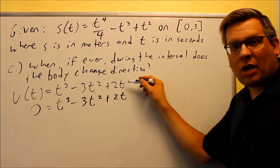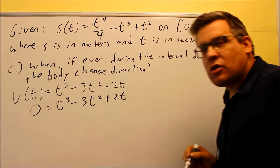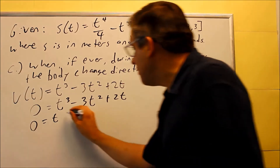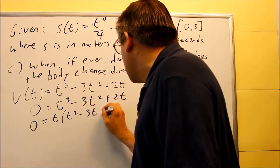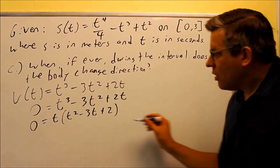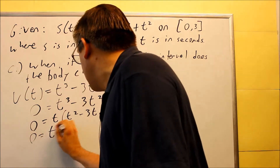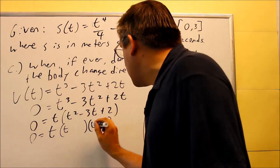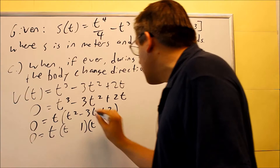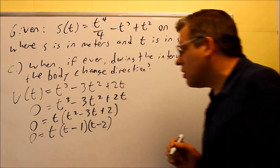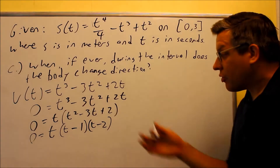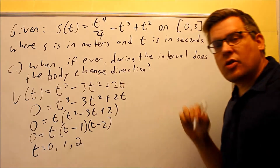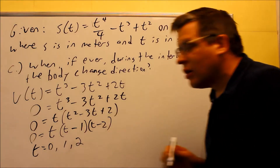The velocity function we found in part B is set equal to zero. To solve it, we factor — we can pull out a common factor of t, and that leaves a factorable quadratic. Factoring one more time gives us t(t − 1)(t − 2) = 0. Setting all three factors equal to zero, we get t = 0, t = 1, and t = 2 seconds. Those are the places where it's not moving, but that doesn't confirm a direction change yet.